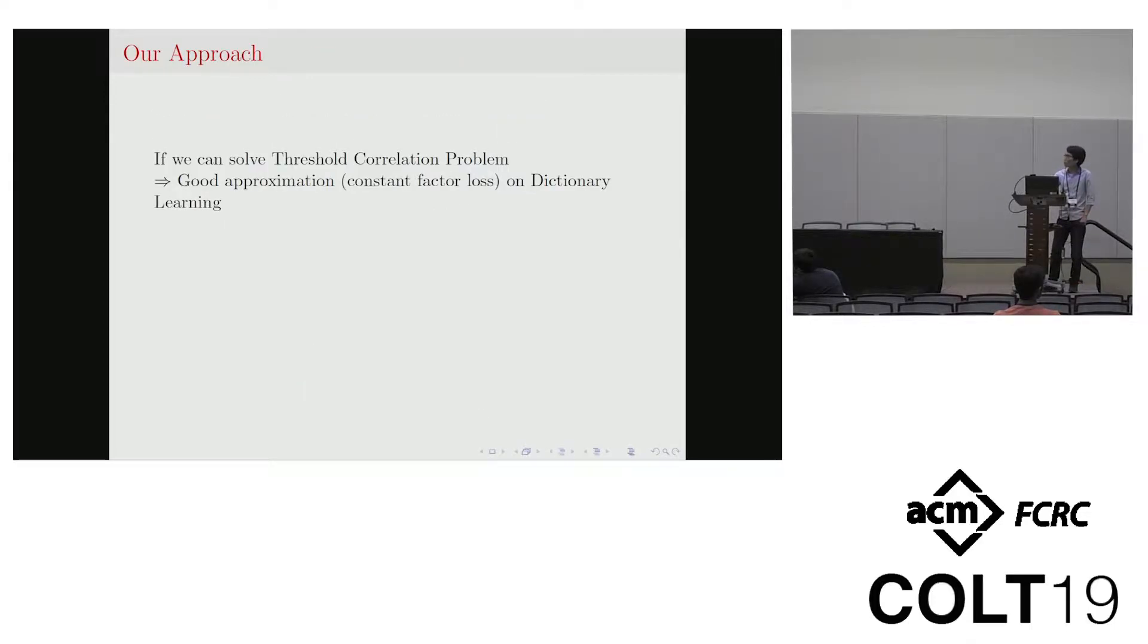Then here is the guarantee we have. We observe if we can solve this threshold correlation problem optimally, then we get a very good approximation on the dictionary problem. The reason why is that, again, in each iteration we are trying to find out one vector and put it into the dictionary, and then how to find this vector is by this threshold correlation problem. And then after each step we update our input vector recursively and then make a loop.